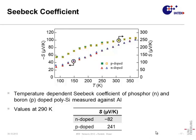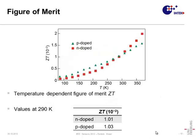The high Seebeck coefficient of the p-doped material partially compensates for its inferior thermal conductivity and electrical resistivity. This is observable in the figure of merit of the material as well. Even if their material properties differ significantly, the resulting figures of merit are almost similar. At around room temperature, the figure of merit of both materials is around 10⁻². Below room temperature, the p-doped material shows slightly better performance, and above room temperature the opposite is true.